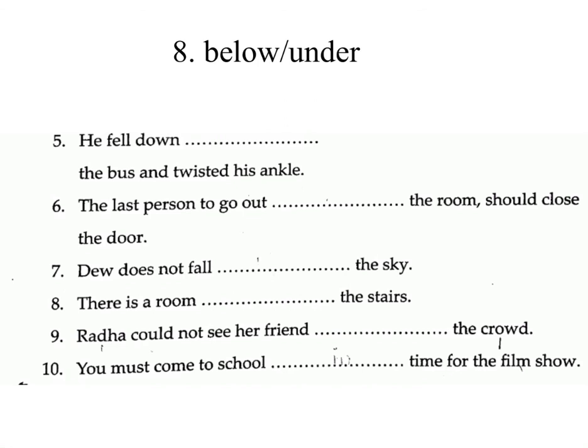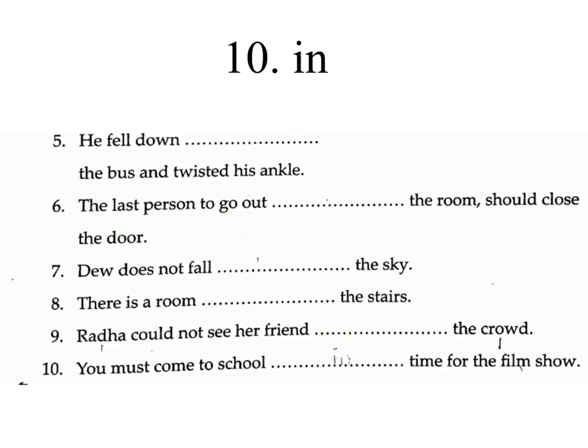Sentence 5: He fell down ___ the bus and twisted his ankle. Answer: from. Sentence 6: The last person to go out ___ the room should close the door. Answer: of. Sentence 7: Dew does not fall ___ the sky. Answer: from. Sentence 8: There is a room ___ the stairs. Answer: below/under. Sentence 9: Rada could not see her friend ___ the crowd. Answer: in. Sentence 10: You must come to school ___ time for the film show. Answer: on.